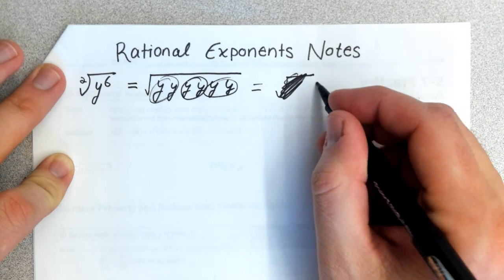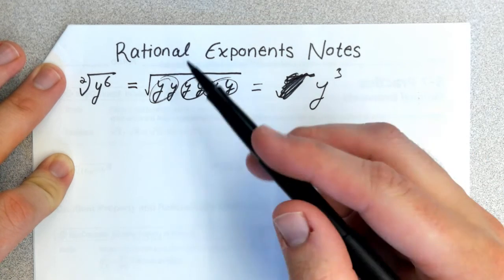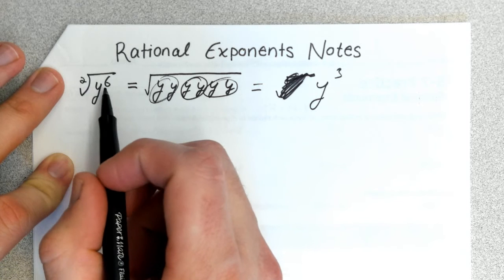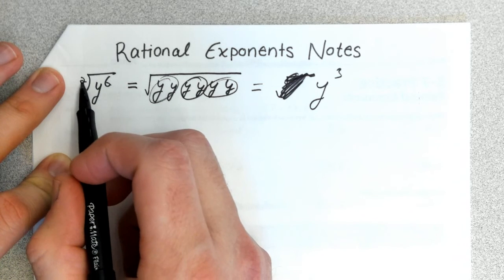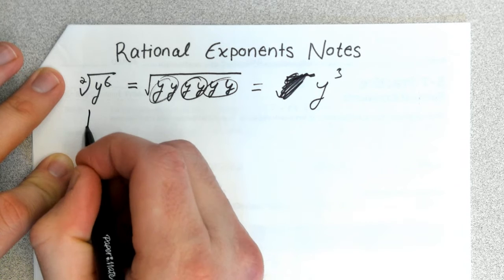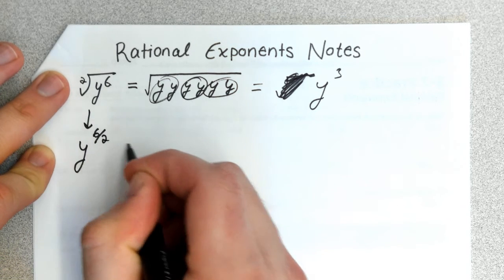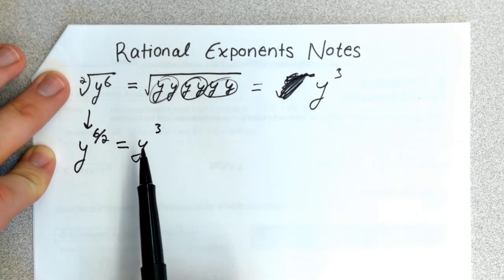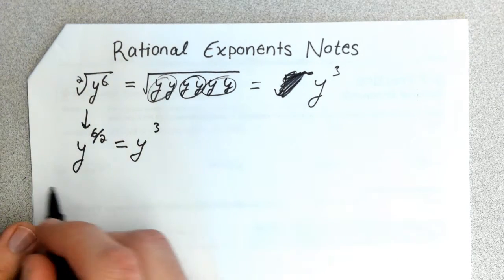Now, a shortcut is to take the power and divide it by the root: 6 over 2. In other words, we could write this as y^(6/2), which gives us y^3. This leads us into a property. I'll give you one more example before the formal rule.